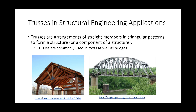I want to talk a little bit about trusses, because that's what we're going to be looking at for the next couple of lectures. You've probably seen trusses before — we have roof trusses, we have bridges, et cetera. A textbook definition: a truss is basically an arrangement of straight members. Usually we take those members and arrange them in triangular patterns to form some structure or component. We use them in roofs, in bridges, you name it. Go to Walmart, look up — it's nothing but trusses.